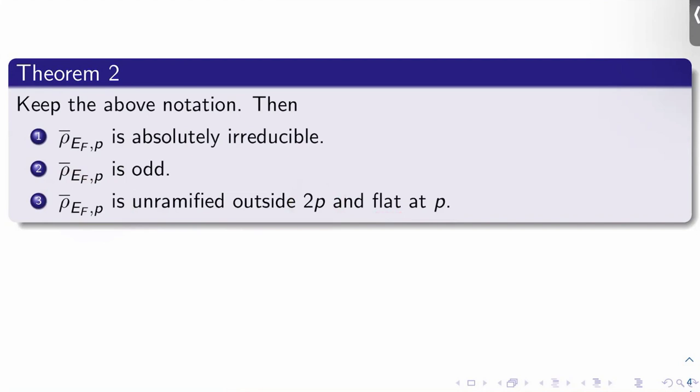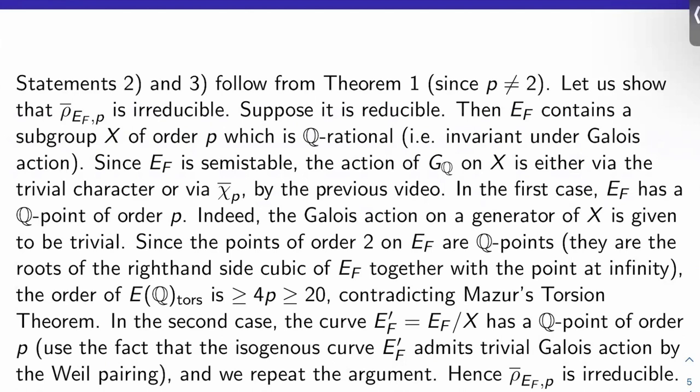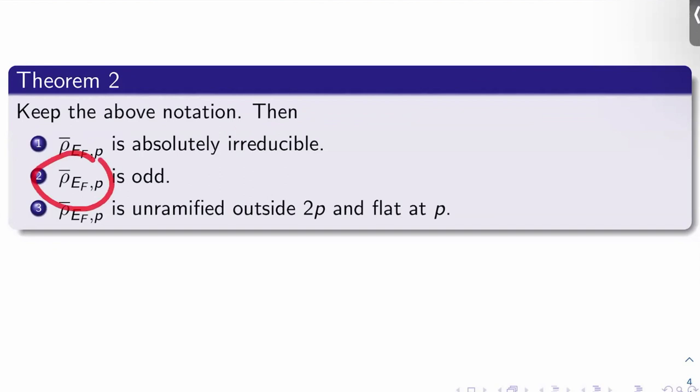Okay, so two of the three of these things we've already proven basically. So let's look at the proof. Statements two and three just follow from theorem one because we know ρ̄_E,P is always odd regardless of the elliptic curve, right? So that's easy.